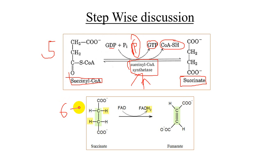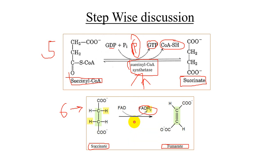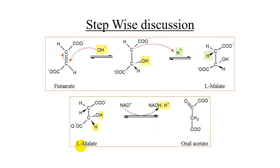The sixth step: succinate is oxidized to form fumarate. FAD is reduced to FADH₂ in this process. Succinate dehydrogenase catalyzes the removal of two hydrogens from succinate, and the final product is fumarate.